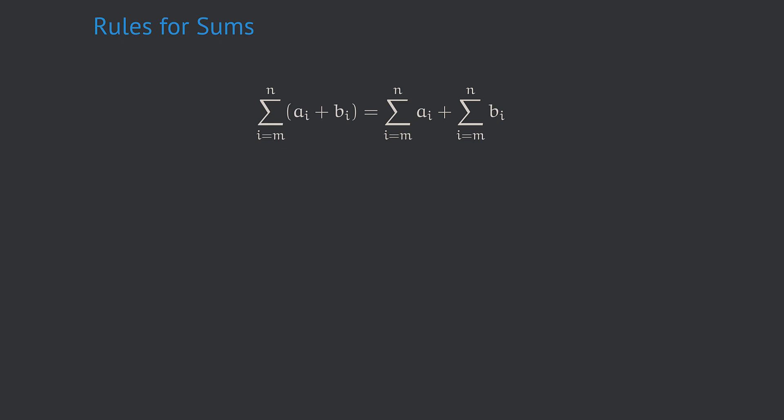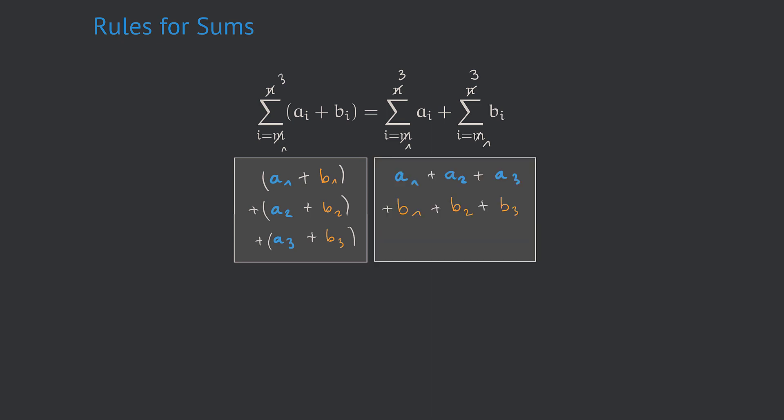In order to verify this fact, let's look at a specific example where m equals 1 and n equals 3. In this case, the extended version of the left-hand side of the equation looks like this, whereas the extended version of the right-hand side looks like this. These two boxes, however, are equal because they can be transformed into each other by a simple rearrangement of the summands.